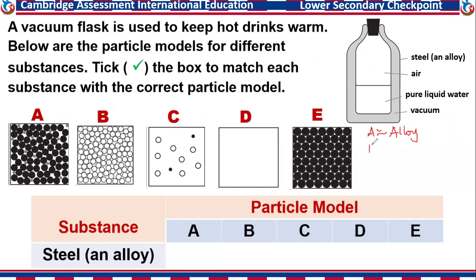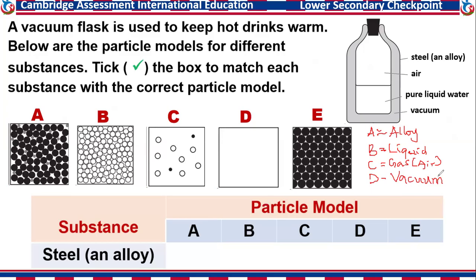Moving to B — if you look at B, you will see that B is a liquid. Then particle C is representing the gaseous state, and that would be the air. Then D has no particle present, so that will be a vacuum. Then particle model E is a pure solid.